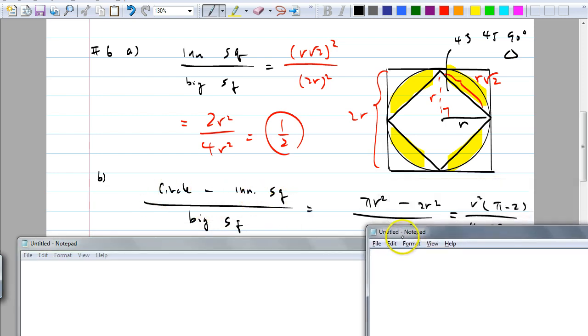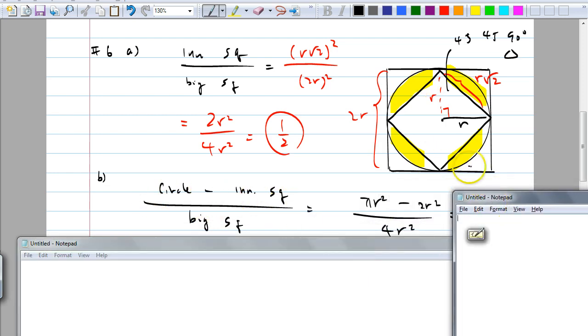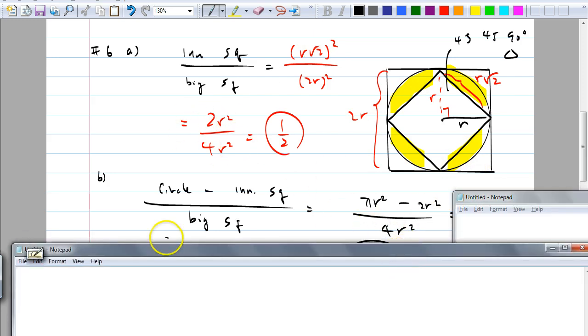So πR² minus, we know what the area of the square inside was. We just found it, right? 2R² over 4R². We know what the area of the big square is, just like before, right? Isn't that the same thing as before? Yeah. All you have to do is subtract the circle minus the area of the circle minus the smallest square. And when you do, you get,